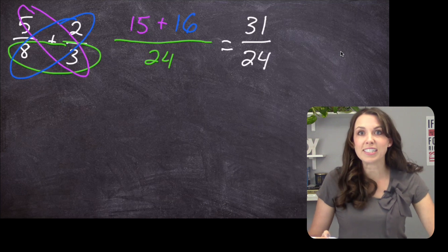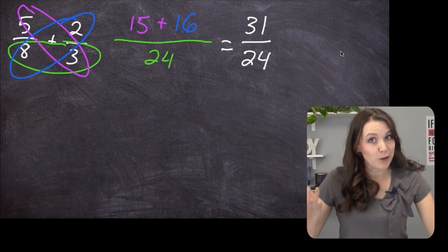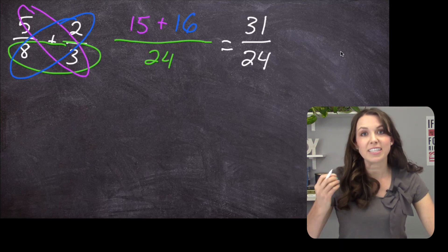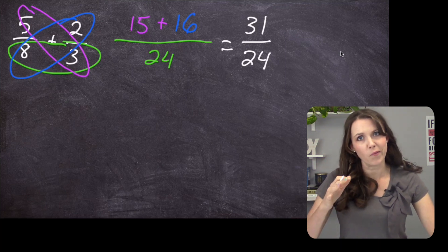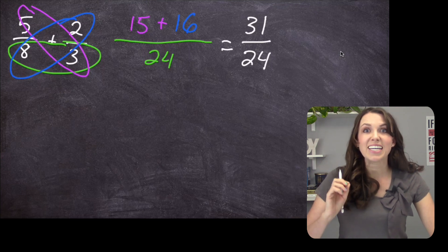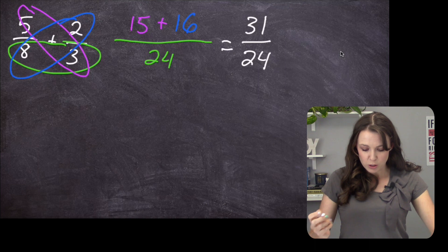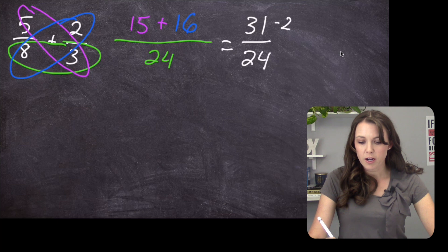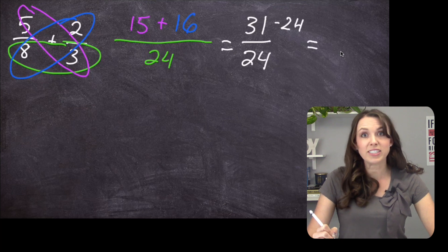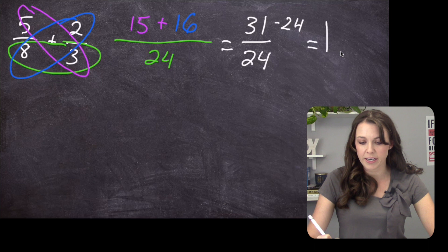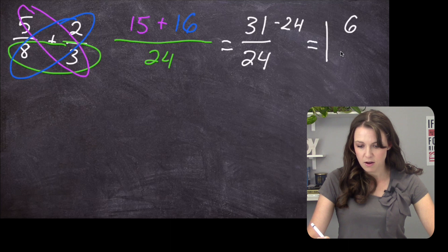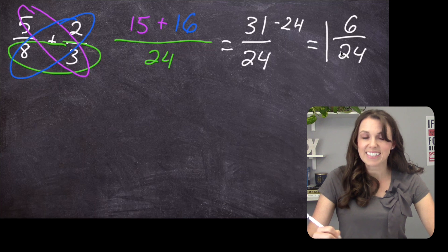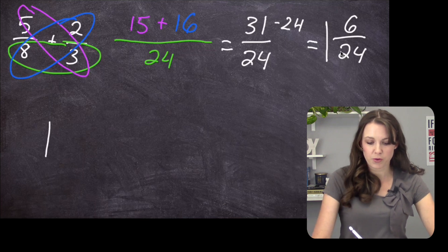You'll notice the numerator is larger than the denominator, and a lot of times we want to reduce it to be as small as it possibly can be. So what we're going to do is subtract 24 from the top, and that gives us a whole number of one. So 31 minus 24 is 7 over 24. But notice again, 6 can go into both — let me just rewrite it.